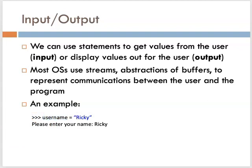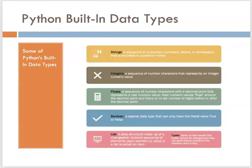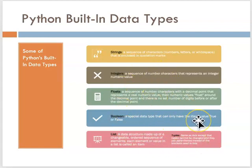Just to recap, here are some of the built-in fundamental data types in Python that we're going to use constantly: strings, integers, floats, booleans, and lists and tuples — some of which more properly are called data structures. I hope that helped, and we'll see you next time.